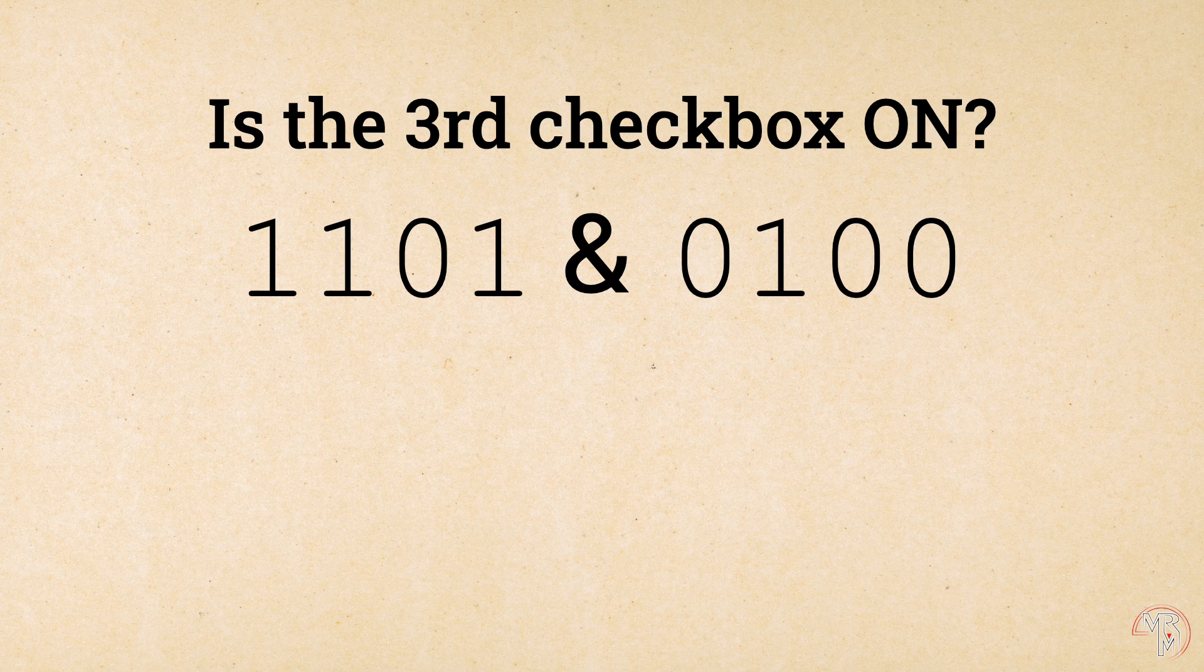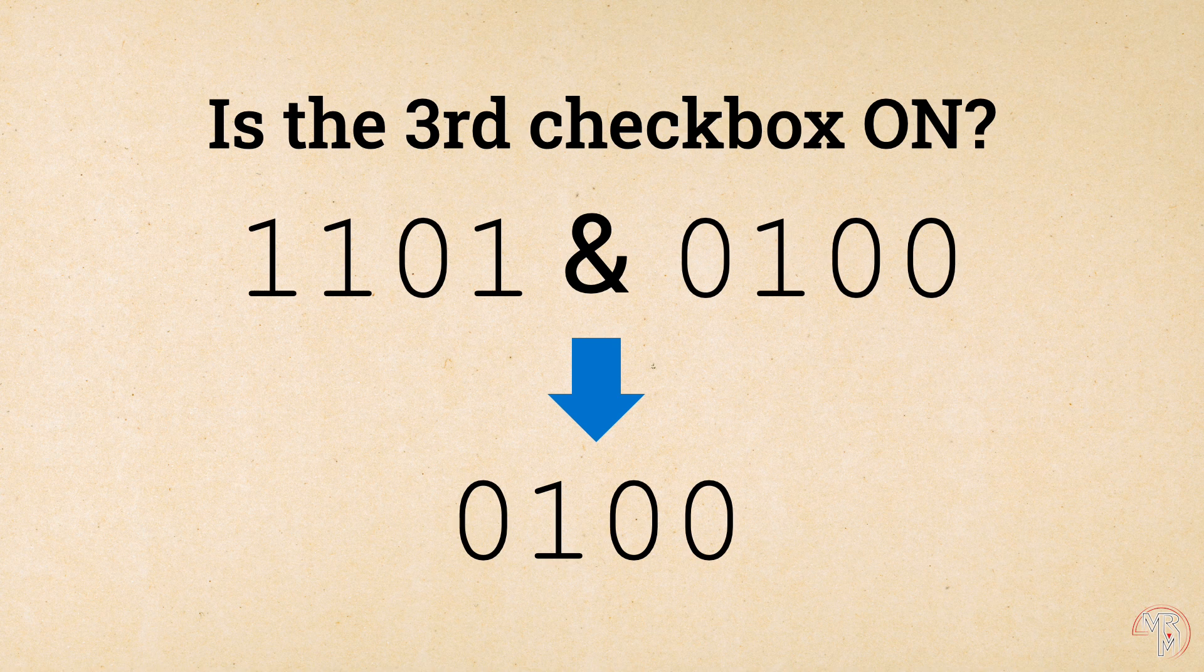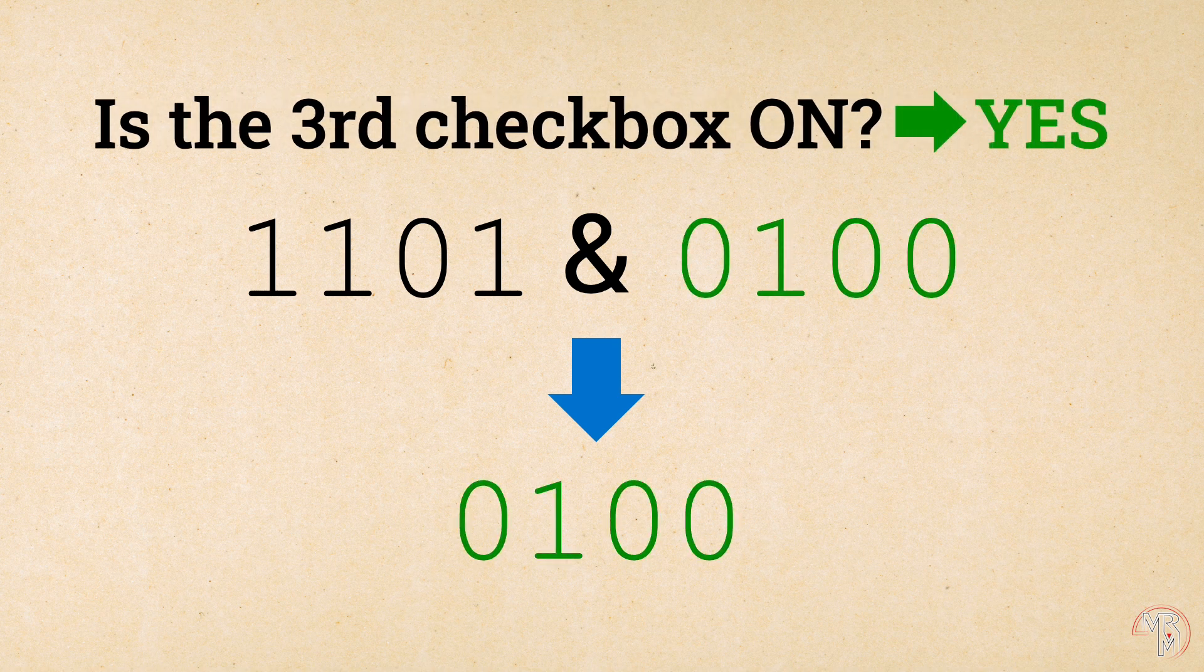So, one, one, zero, one, and zero, one, zero, zero results in zero, one, zero, zero, which is identical to the configuration mask, which in turn means that the third checkbox is on.